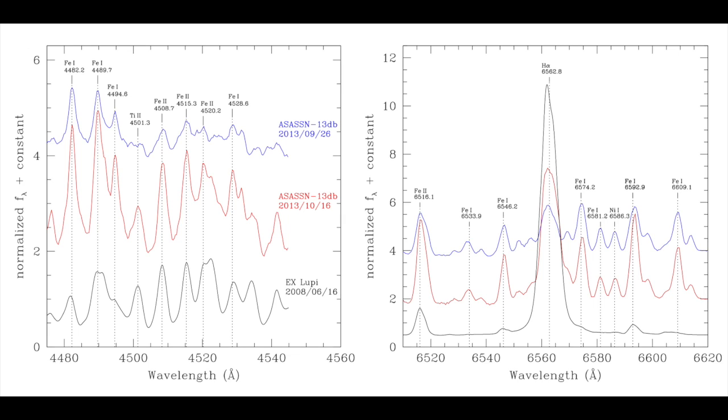These figures show a continuum normalized spectra of ASASSIN 13dB in red and blue compared to a spectrum of the 2008 outburst in EX Lupi, shown in black. All of the identified features of the EX Lupi spectrum are present in the ASASSIN 13dB spectra, but the ASASSIN 13dB spectra also show many features not present in the EX Lupi spectrum.